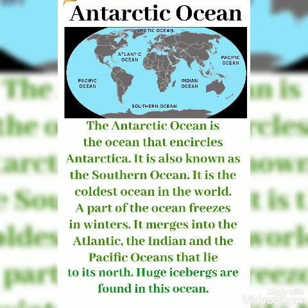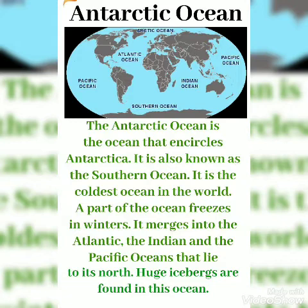Indian Ocean. It is the warmest ocean in the world. Antarctic Ocean. The Antarctic Ocean is the ocean that encircles Antarctica. It is also known as the Southern Ocean. It is the coldest ocean in the world. A part of the ocean freezes in winters. It melts into the Atlantic, the Indian and the Pacific Oceans that lie to its north. Huge icebergs are found in this ocean.